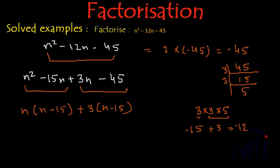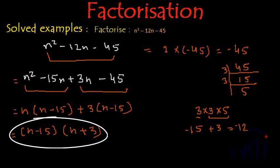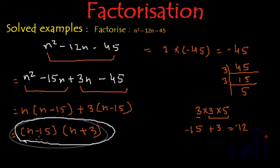And now we have two terms in the expression where n - 15 is common in both the terms. So I can take n - 15 common and inside the bracket we will have n and +3. So these two, n - 15 and n + 3, will be the factors of n² - 12n - 45.